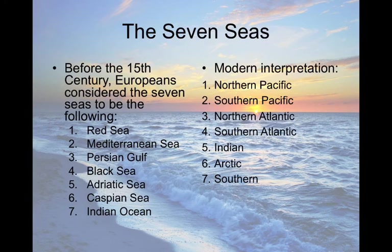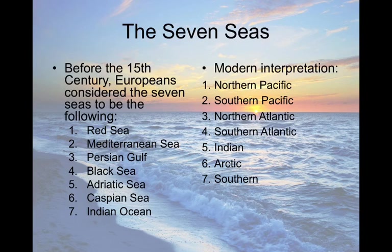Maybe you've heard of the seven seas — a term used by European explorers, and they tended to be a little European-centric. The list includes the Red Sea, Mediterranean, Persian, Black, Adriatic, Caspian, Indian, and so on. They were really important to trade at the time. The modern interpretation of the seven seas are the five oceans we've talked about, but they split them up — so the Pacific and Atlantic are each divided into north and south, giving you North Pacific, South Pacific, North Atlantic, South Atlantic, Indian, Arctic, and the Southern Ocean — which is what modern navigators call the seven seas.